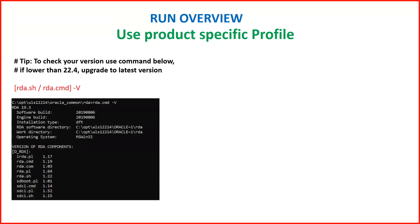Before execution, check the version of your RDA tool using the command rda.sh or rda.cmd with the -V flag. As you can see on the screen, the current version is 9.3. If it is lower than 22.4, which is the current version as of today, you should upgrade to the latest version — I will show you how to do that in the next few slides.